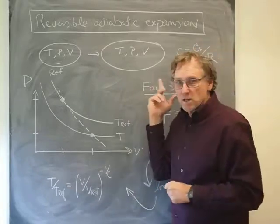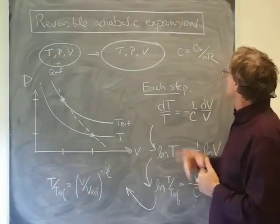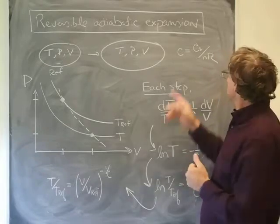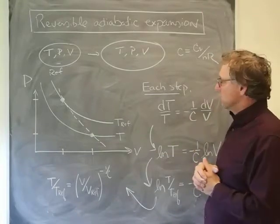There's a number that's important here which we call the reduced heat capacity, cv, the heat capacity at constant volume, which is just cv divided by n times the gas constant.